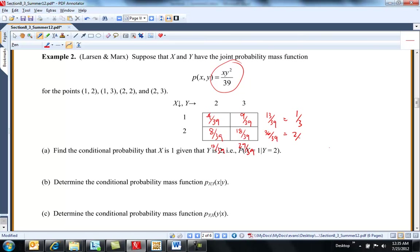So this is 1/3. This is 2/3. 12/39 is 4/13 and 9/13. Okay, so here's Y's density and here's X's density.